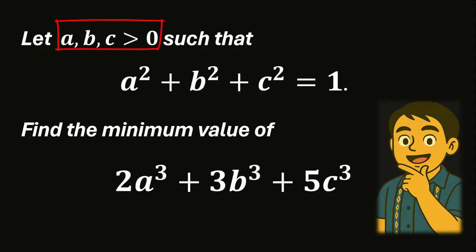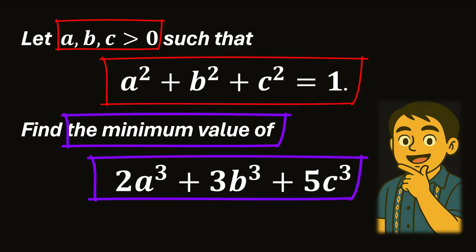Let a, b, and c be positive real numbers, such that a squared plus b squared plus c squared equals 1. We are asked to find the minimum value of 2a cubed plus 3b cubed plus 5c cubed.